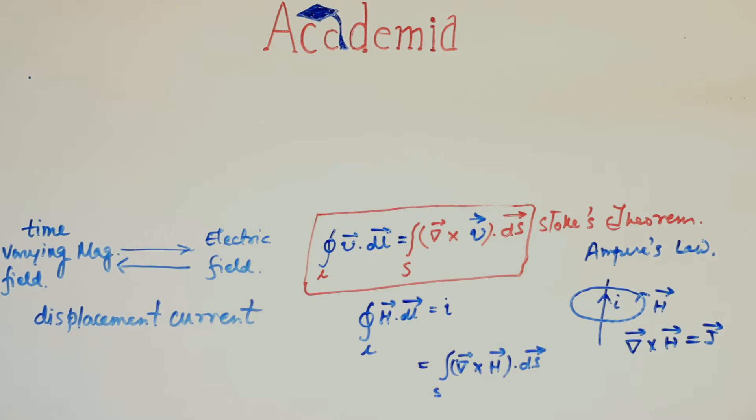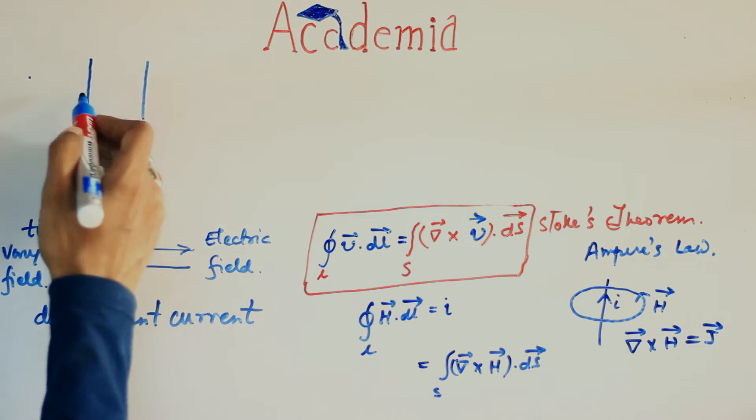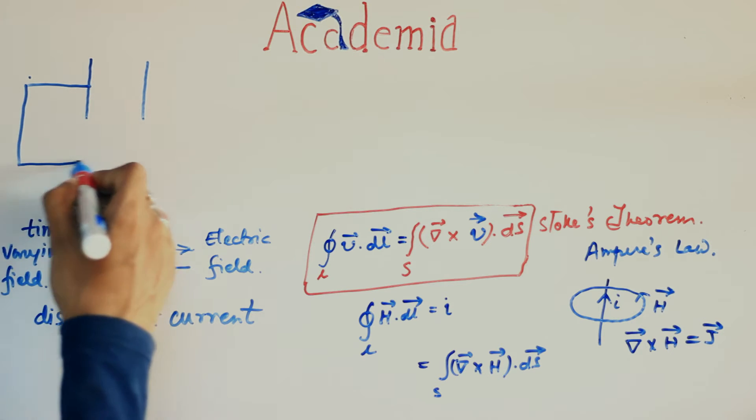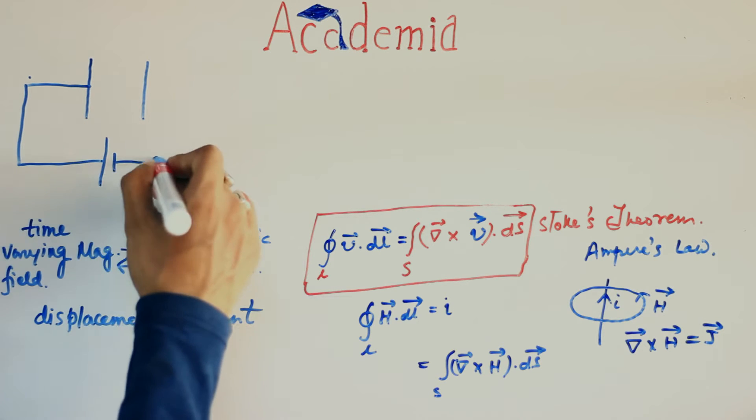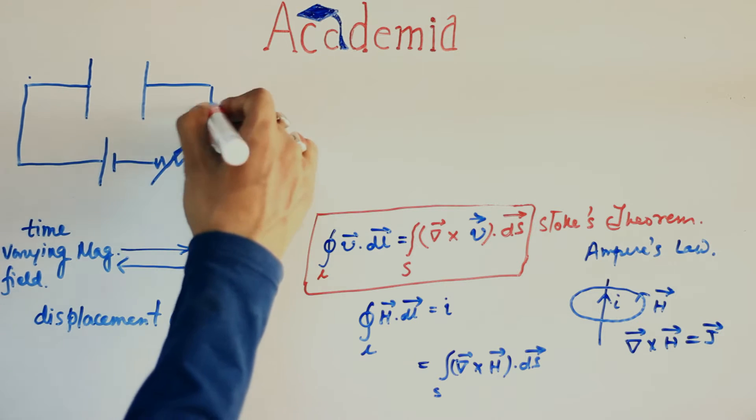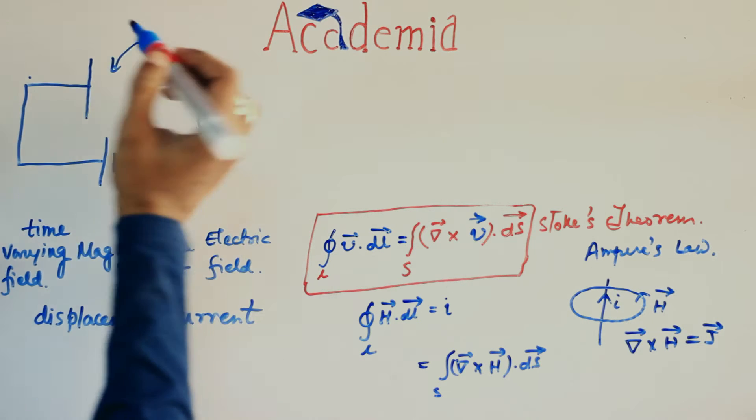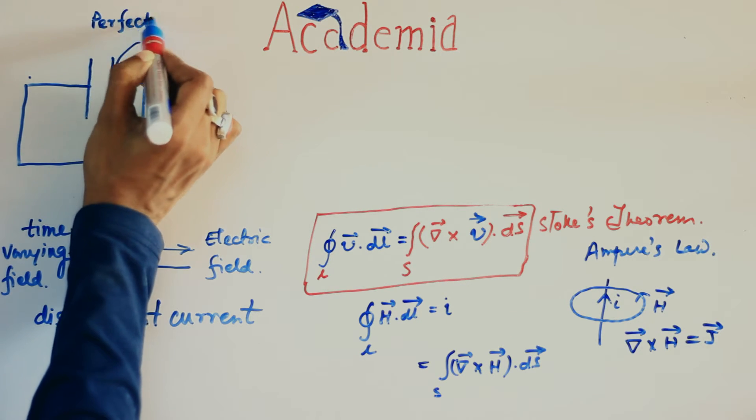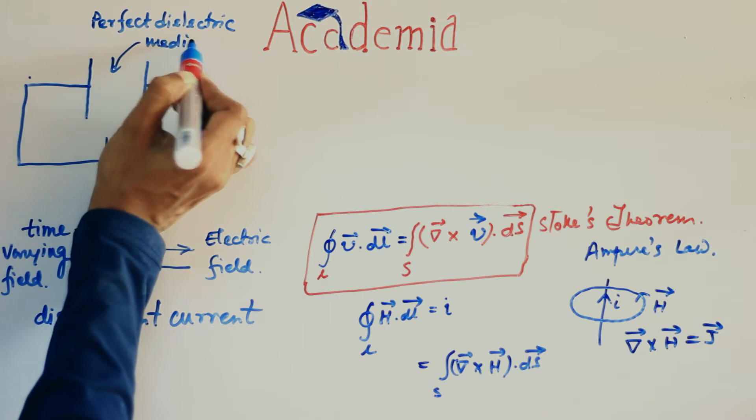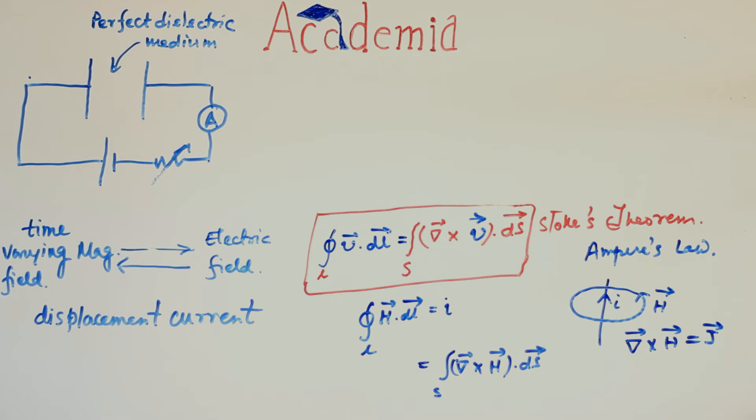All of us from our previous classes already know the charging procedure of capacitor. Two parallel metal plates supplied with a DC voltage source and a variable resistor with an ammeter in series. Nothing in between, that is perfect dielectric medium. So no current can flow between these plates since dielectric cannot conduct electricity as we already know.